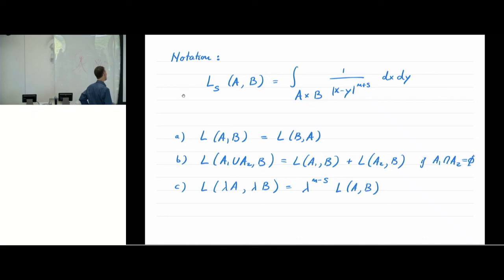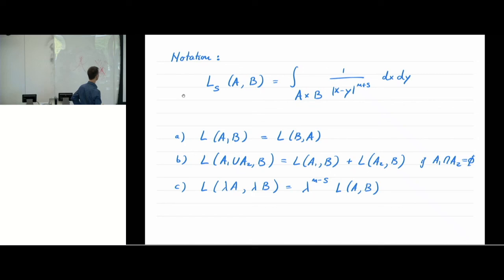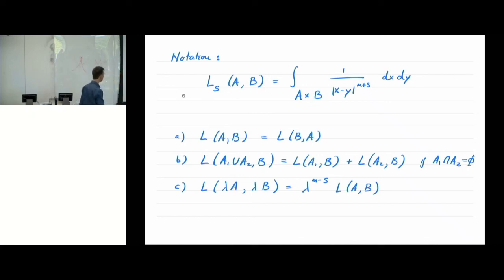The perimeter of E is basically integrating all contributions between X and Y relative to this kernel, when X is in E and Y is in the complement of E. What is very important throughout the theory is this bilinear form: given two sets A and B, the energy L(A,B) is the integral of the kernel 1/|x−y|^(N+S) for all X in A and Y in B. L(A,B) is symmetric, linear in each variable, additive for unions of disjoint sets, and has the scaling property: dilating A and B by lambda picks up a factor of lambda to the (N−S).